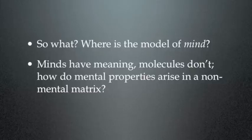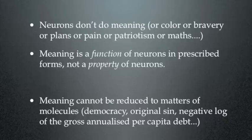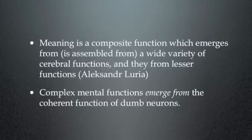So, so what? Where in all of this is the model of mind? The whole point here is that minds have meaning, but molecules don't. So how do mental properties arise in a non-mental matrix? The neurons, of course, don't do meaning. They don't do color or bravery or plans or patriotism or maths. Meaning, and all of the other properties there, mental properties, is a function of neurons where they are joined in prescribed forms, but it is not a property of neurons. Meaning cannot be reduced to matters of molecules, nor can democracy, concepts like original sin, or the negative log of the gross annualized per capita debt, which in most countries throughout the world today is exploding.